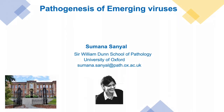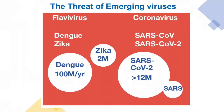Our research focuses on pathogenesis of emerging viruses, and we have a particular focus on two different families of these viruses. One is Flavivirus, which includes dengue and Zika, and more recently on the coronaviruses, which includes SARS-CoV-2, the agent causing the ongoing pandemic.